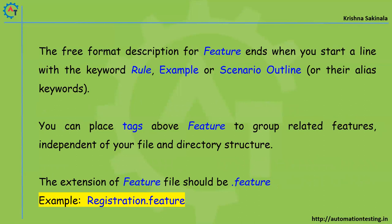The free-format description for a feature ends when you start a line with the keyword 'Rule', 'Example', or 'Scenario Outline', or their alias keywords. So the moment you start another line with one of those keywords, that signals the end of the detailed description. For example, 'Example' has an alias 'Scenario', and 'Scenario Outline' also has another alias that we will see later.